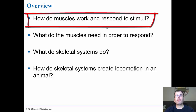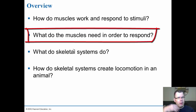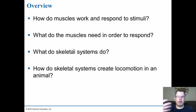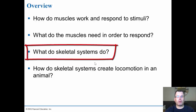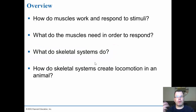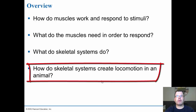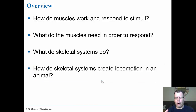So first we're going to look at how muscles work and respond to stimuli. Second, what muscles need in order to respond — what causes the action potential from the nerve to signal inside the muscle cell causing it to contract. Then we'll discuss the various skeletal systems — endo, ecto, and hydrostatic. Finally, how skeletal systems create locomotion: movement through walking, swimming, and flight, looking at both vertebrates and invertebrates and the similarities between them.